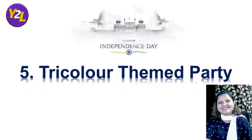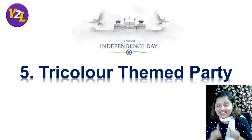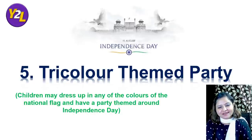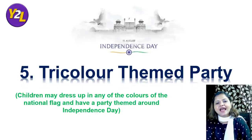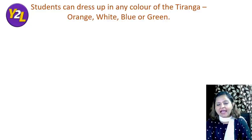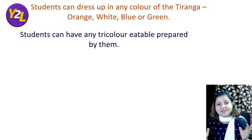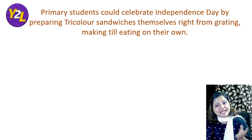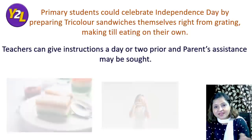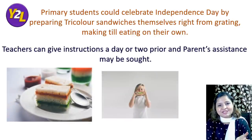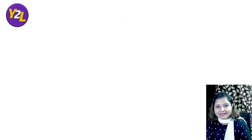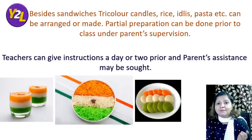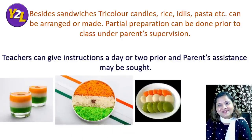The fifth activity is a Tri-color Themed Party — the gala activity — and it can be done in online mode too. Children dress up in any of the colors of the national flag, giving a color-coded class party themed around Independence Day. They can also prepare tri-color eatables such as sandwiches, candles, rice, idlis, or pasta. Primary students can prepare these under parental guidance, with a reminder sent one or two days prior so they have all the ingredients ready.